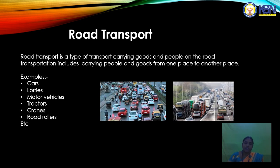Examples of road transport vehicles include cars, lorries, motor vehicles, tractors, cranes, road rollers, and more. These are the road transport vehicles used in the movement of goods as well as people from one place to another place in every country, every state, by roadways — this is called road transport.